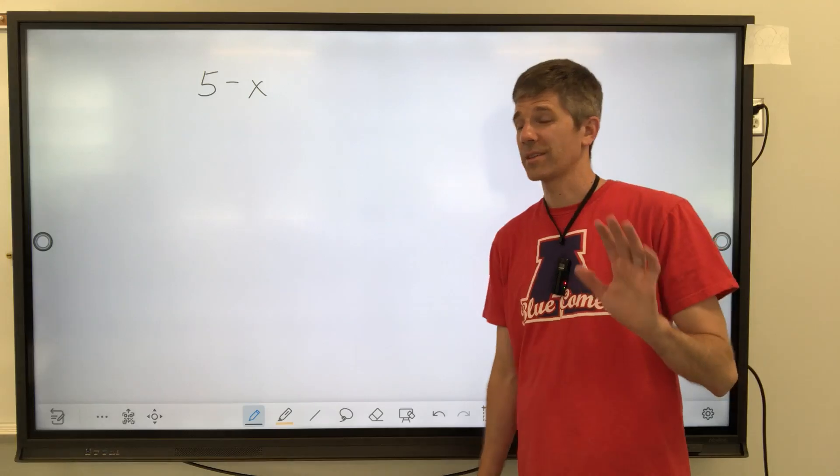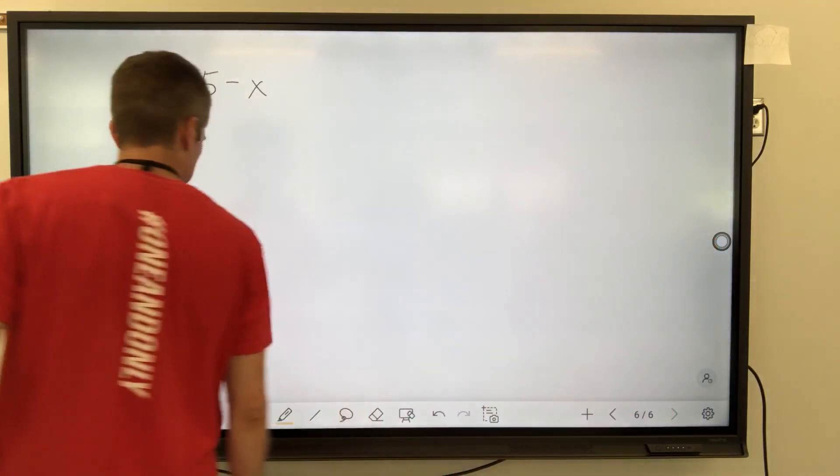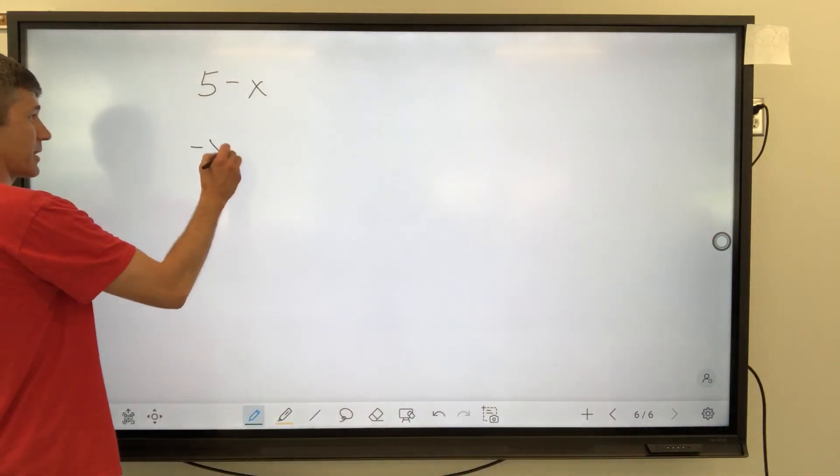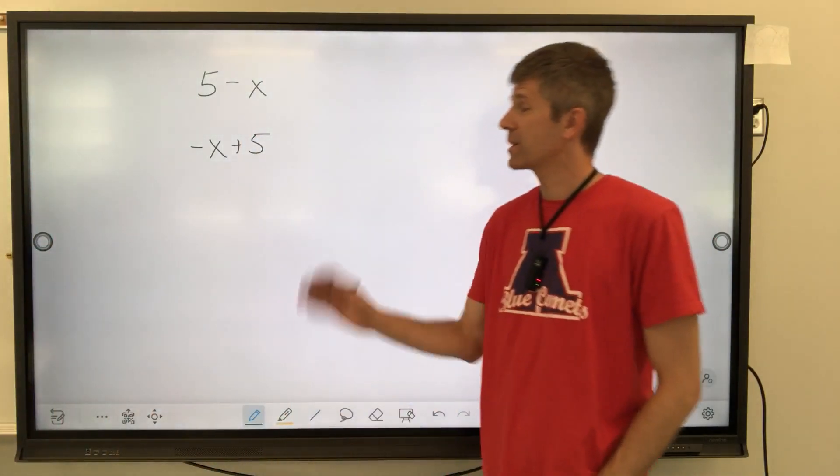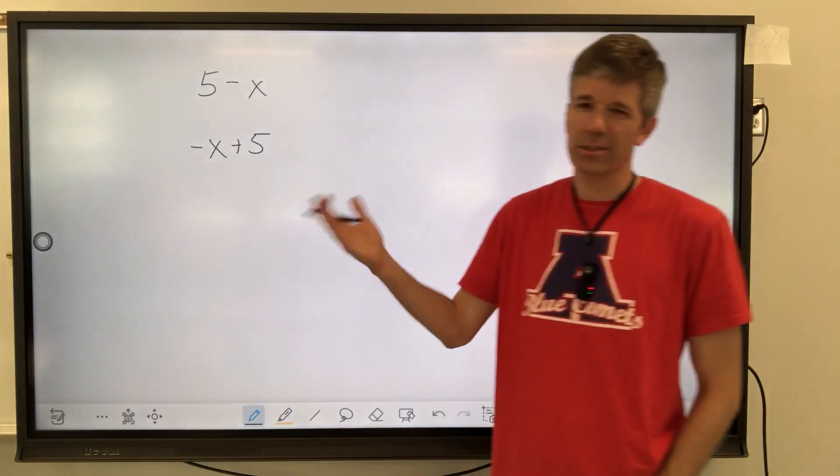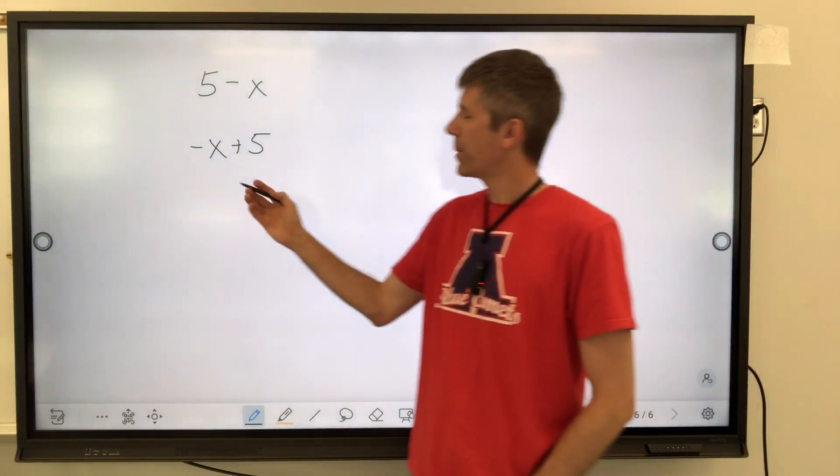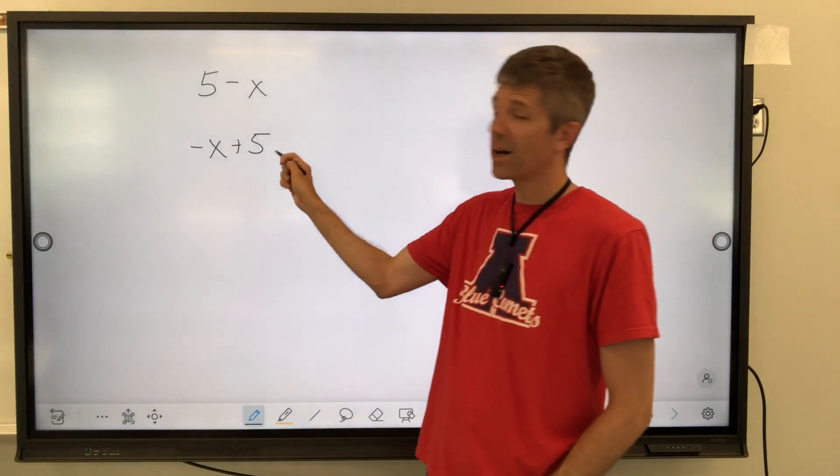I'm going to start in a different place other than looking for a GCF, and I'm going to do something that I personally like to do, and I'm going to put it in order. Order of descending exponents, which means negative x plus 5. This looks like slope intercept form in a sense, but basically we have our variable first and then our constant term second.